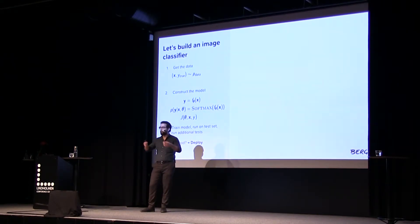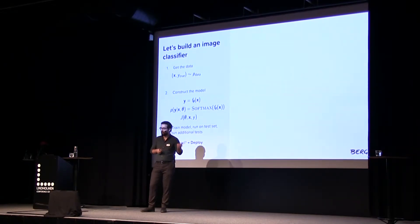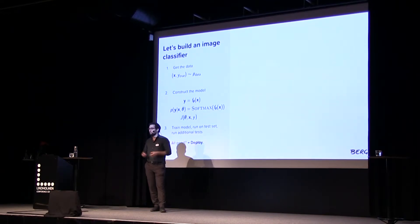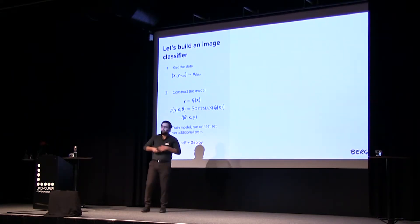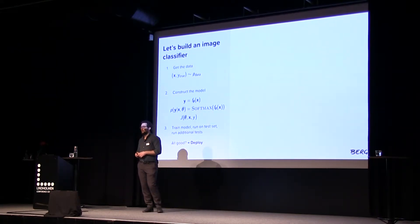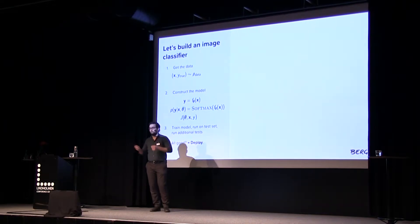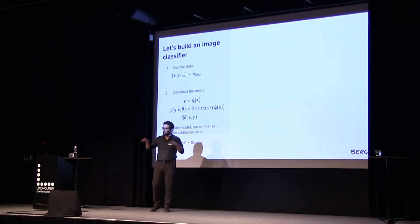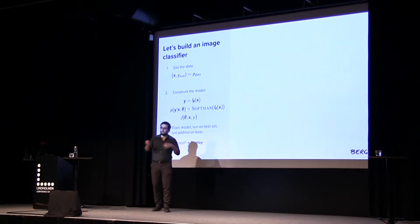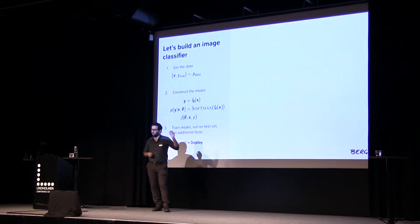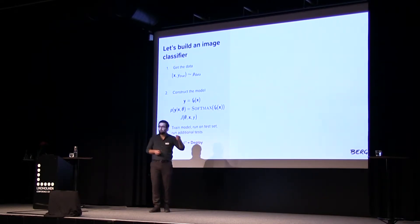The model has an image as its input, produces an output, and we push that through a softmax so we get probabilities over the different classes we're trying to identify. Then we have some method of selecting the final class — usually argmax, the most likely class. To train all of this, we have some cost function J that depends on the weights and the input. We train the model, run it on a test set, compute some more tests, and if everything looks good we deploy it.